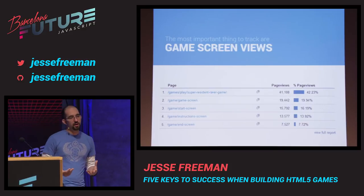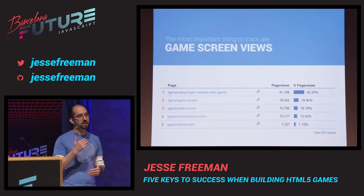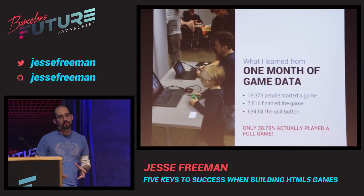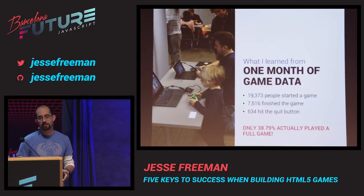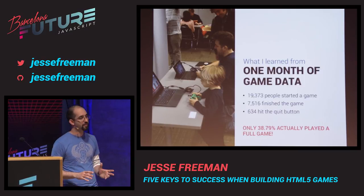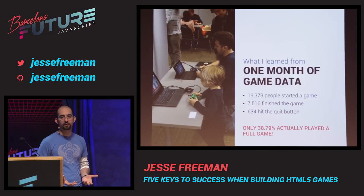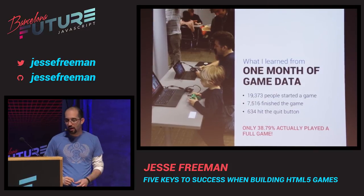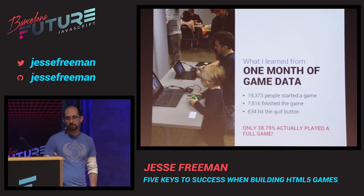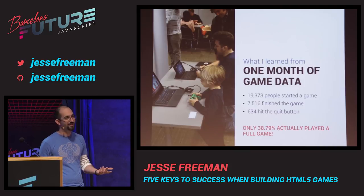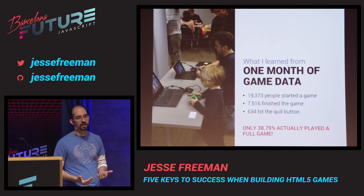The most basic thing I always track are the game screens, so I can see at each part of the game who starts and who gets to the end. From one month of data on just one of my games, about 19,000 unique people played it — to get 19,000 downloads in a native store without any promotion is very difficult. But I'm only seeing 7,500 are actually finishing the game, which tells me that only 38% of people are completing it. So I'm getting a huge drop-off, and because of that I can go back and say: what's really going on in my game?